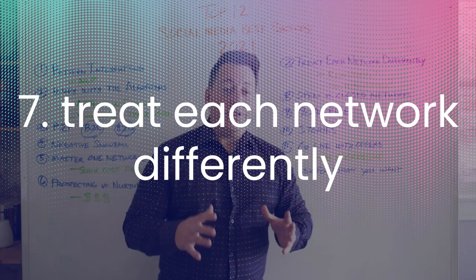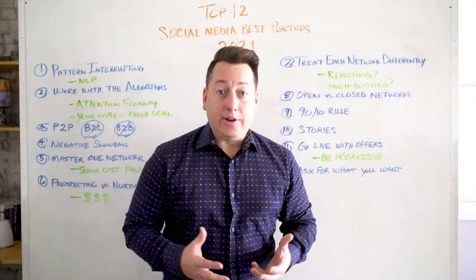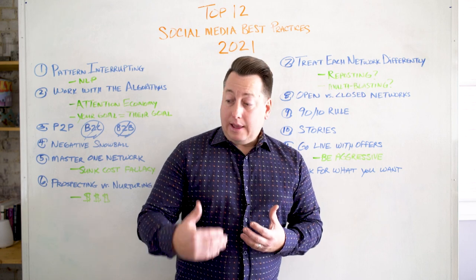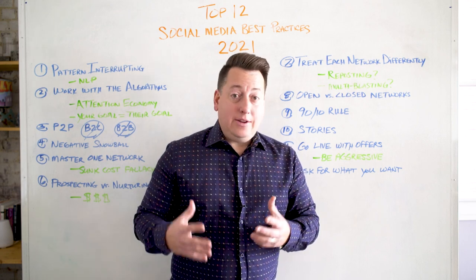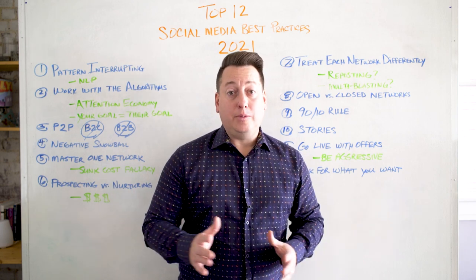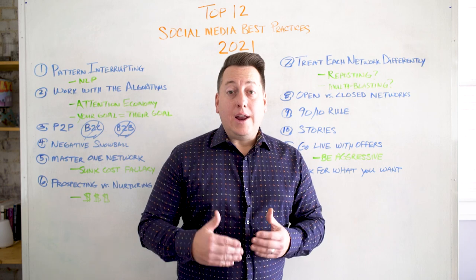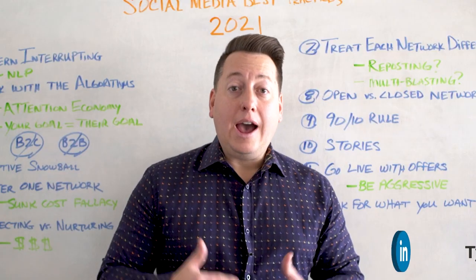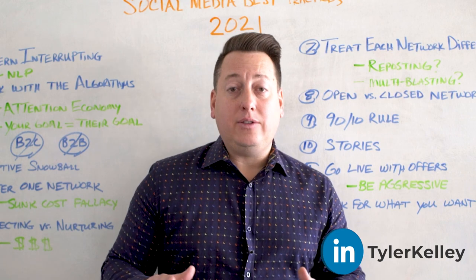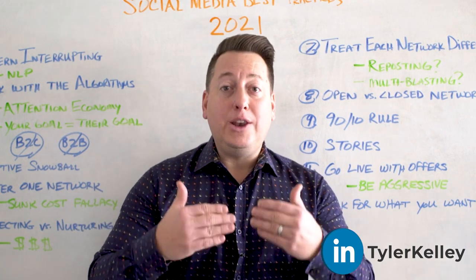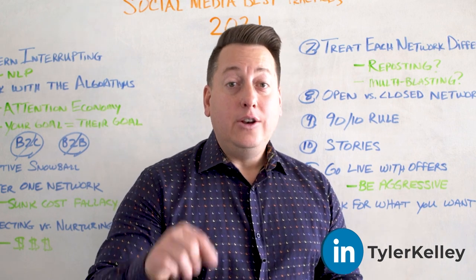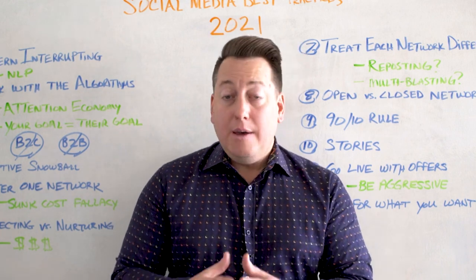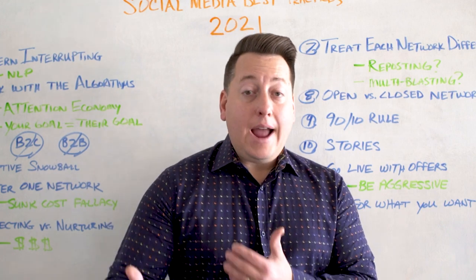Number seven: treat each network differently. I know it's challenging — there's only so much time in the day, and if you're creating a lot of content it's easier to create one or two pieces and blast them on all networks. But it doesn't work. You're not going to get the results you want if you're putting the same piece of content everywhere. In 2021, you have to treat each network differently because the users on each network are different, and the way you interact is different.